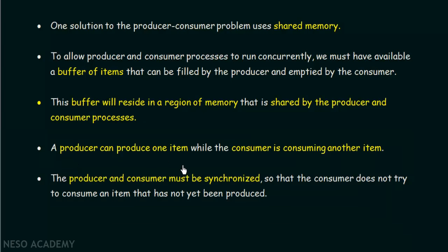A producer can produce one item while the consumer is consuming another item from that same buffer. The producer and consumer must be synchronized so that the consumer does not try to consume an item that has not yet been produced. It can only consume things that have already been produced by the producer — if it tries to consume something not yet produced, there will be an error. They must work in synchronization, and this can happen with the use of shared memory.